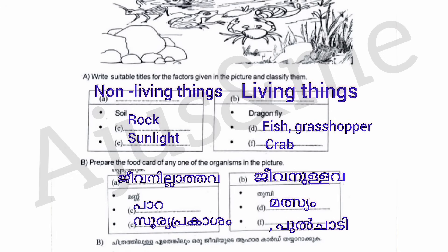If you have a rock, sunlight — these are non-living things. If you have a fish, a grasshopper, a crab, etc. — these are examples of living things.